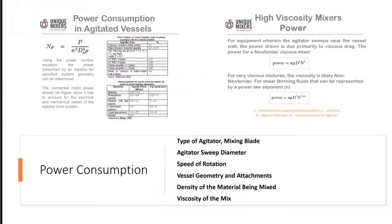It is also important to understand the operating cost of mixers, particularly the power consumption. Power consumption depends on the application and the type of mixer. The factors which influence power consumption include the type of agitator or mixing blade, the sweep diameter of the agitator, the speed of rotation, the vessel geometry and attachments, the density of material being mixed, and the viscosity of the mix.